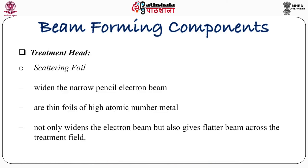The treatment head also contains a scattering foil. When we want to use photons, the flattening filter is used; but if we want electrons, a scattering foil is used. The scattering foil widens the narrow pencil electron beam. These are thin foils of high atomic number material that not only widen the electron beam but also give a flattened beam across the treatment field.